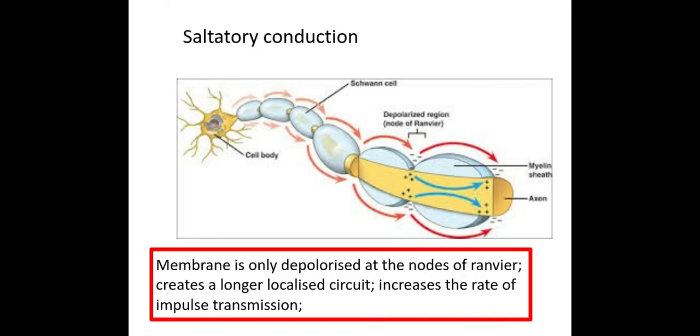Really important here: you do not say that the impulse jumps from node to node because they do not like that on the exam. We need to use the term the membrane, and it's really important we use membrane and not axon and not nerve. The membrane is only depolarized at the nodes of Ranvier.